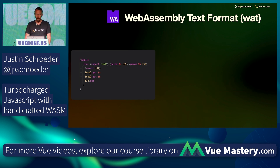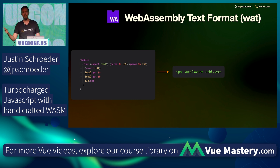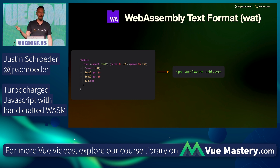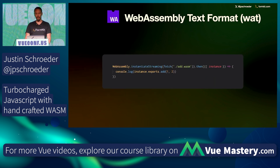If you then take this file that we just wrote — our add function — you can use the inverse of our decompiler, the actual compiler. You take the WebAssembly text format that we just wrote, you call wat2wasm on it, and what pops out the other side is an actual binary. This binary file can be executed in your browser.